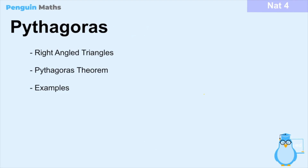Hi everyone and welcome back to another National Form Maths lesson. Today we'll be looking at Pythagoras. We will first look at right angle triangles and describe them in a little bit more detail than we've done before, then move on to how we can use Pythagoras in relation to right angle triangles, and finally look at some example problems and how Pythagoras can be used in the real world to solve problems.